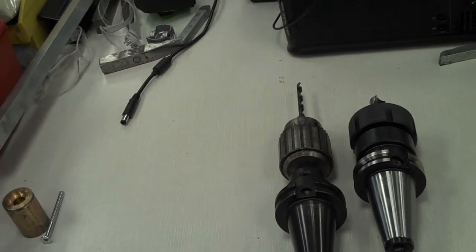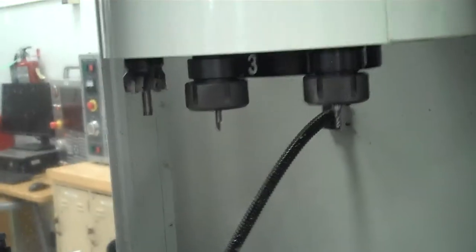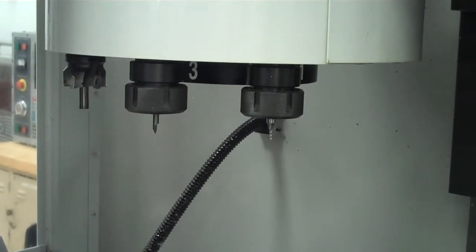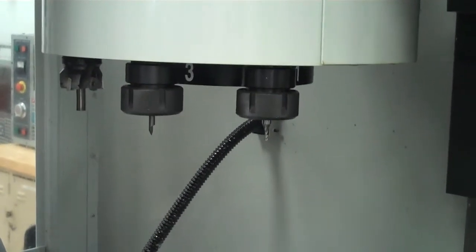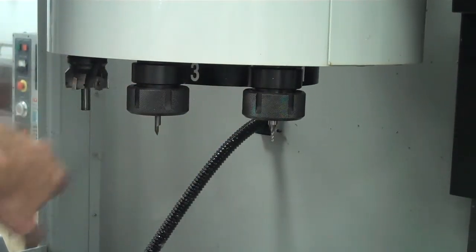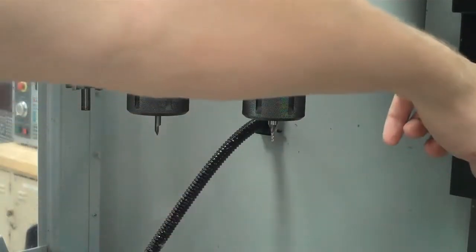Coming over towards the machine, a couple things to point out: if we take a look, I have my tool carousel right here. Now what you can see from this angle is that tool number 2, 3, 4, and 5 are already taken, and tool number 1 is also taken. It's just in the spindle, but it would be right here.